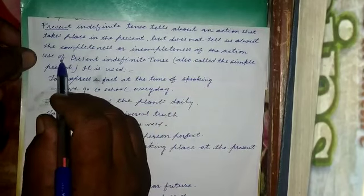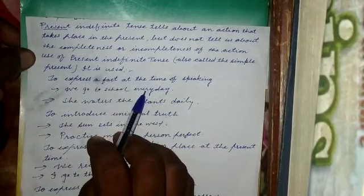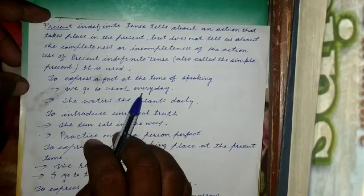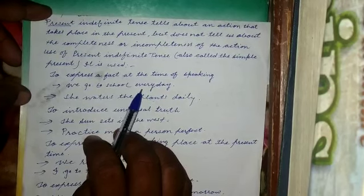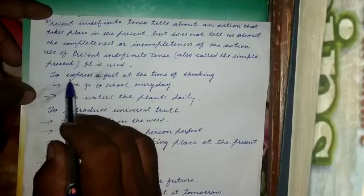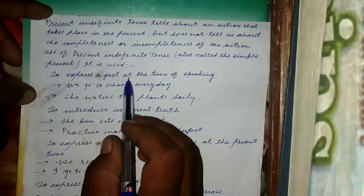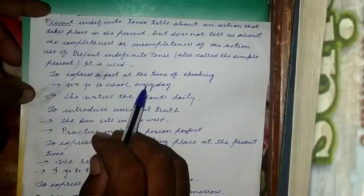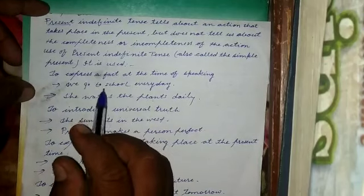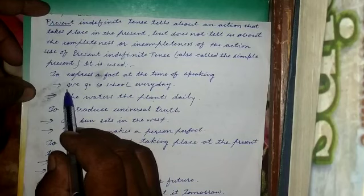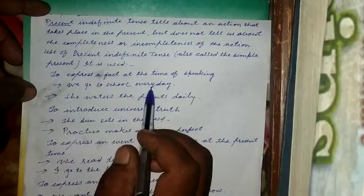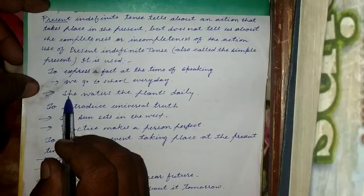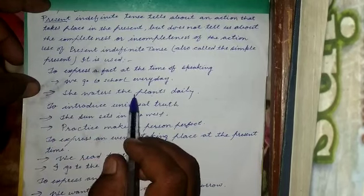Use of present indefinite tense. Present indefinite tense का प्रयोग कब होता है sentence में? To express a fact at the time of speaking — इस effect time के लिए present simple tense का प्रयोग होता है. Example: We go to school every day. Next example देखिए: She waters the plants daily.